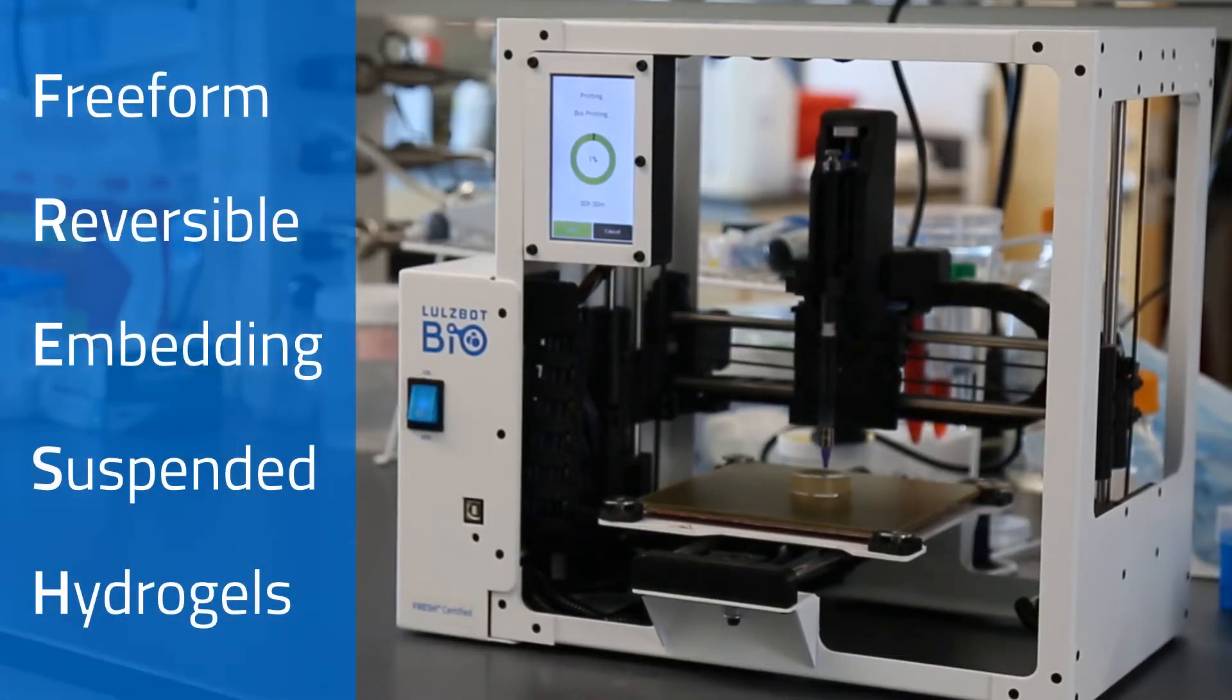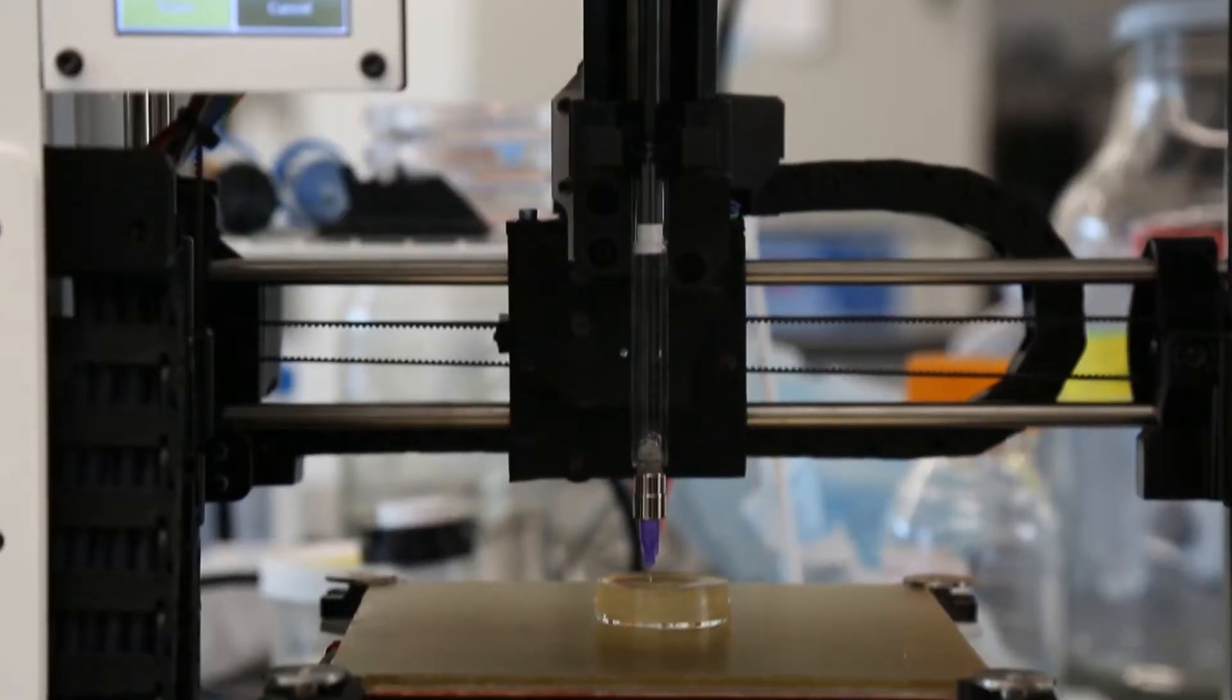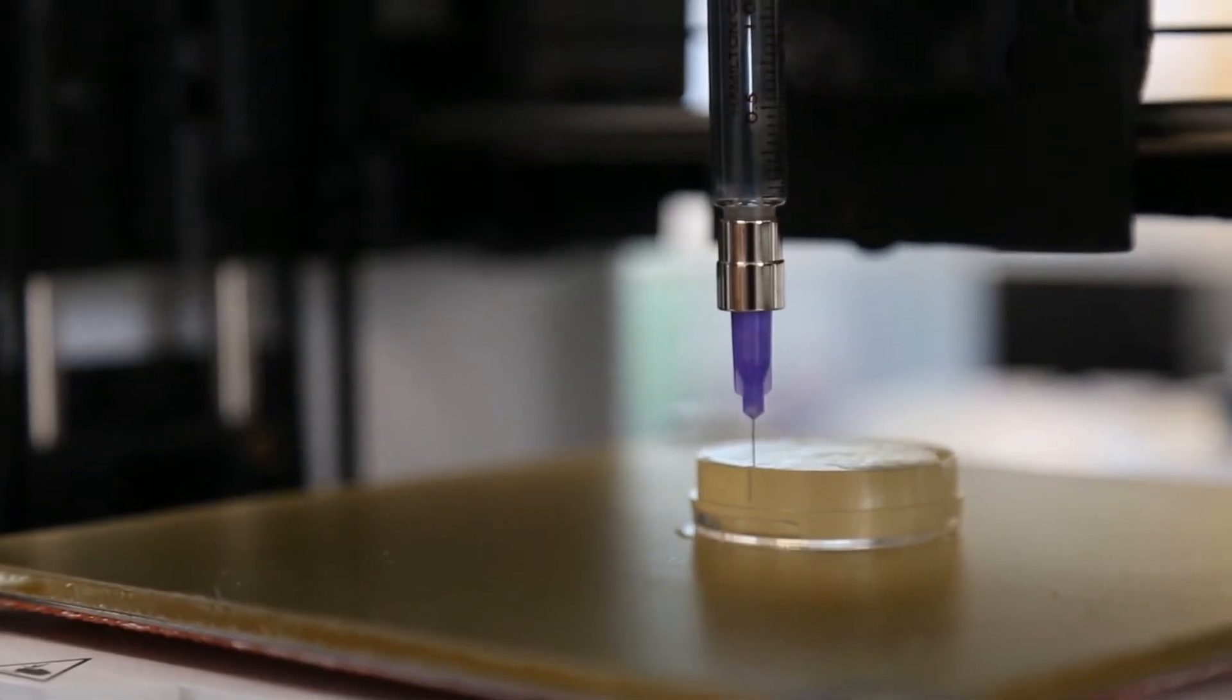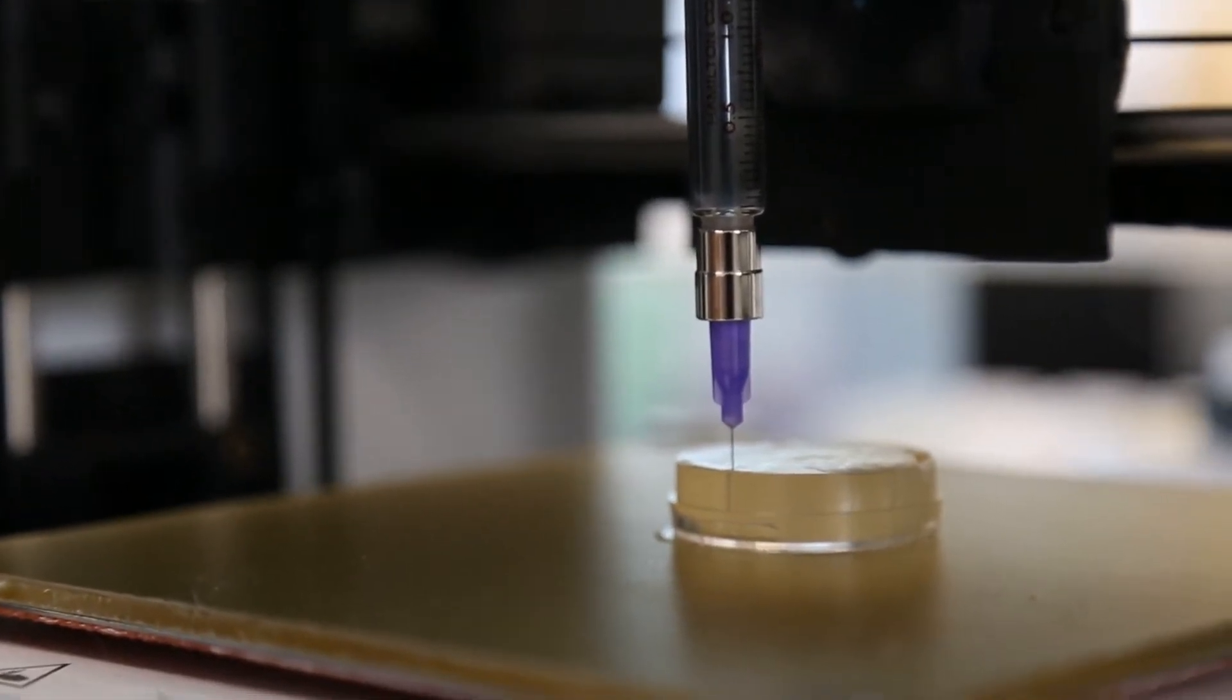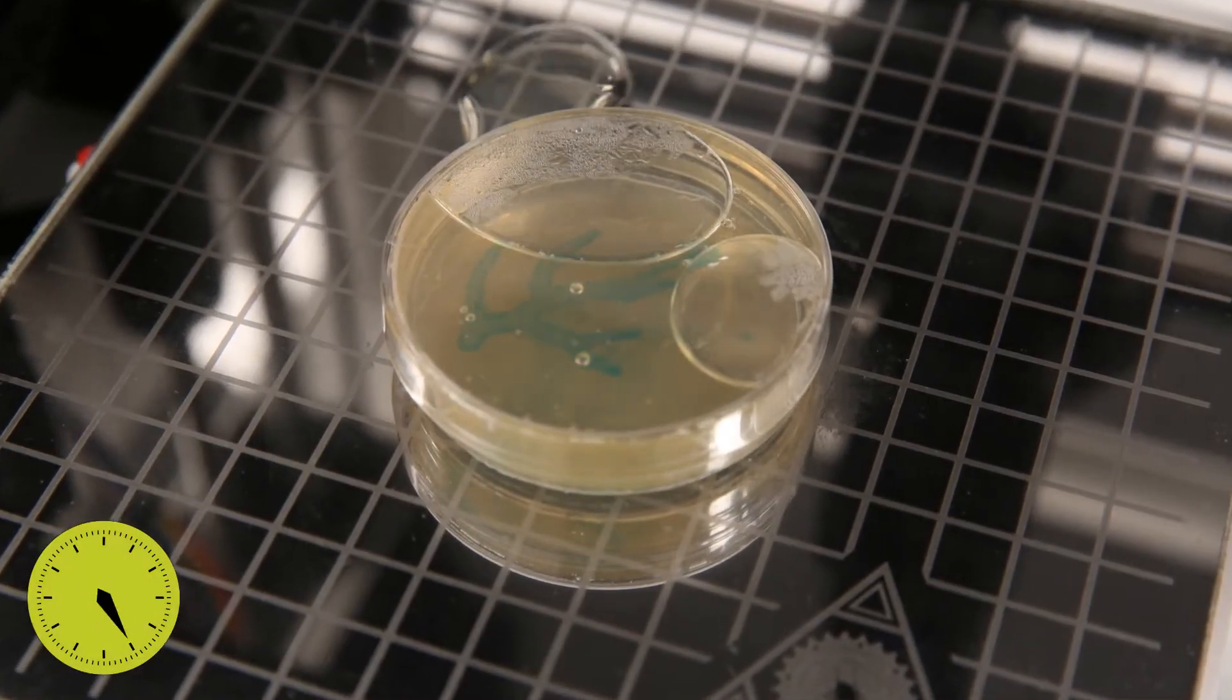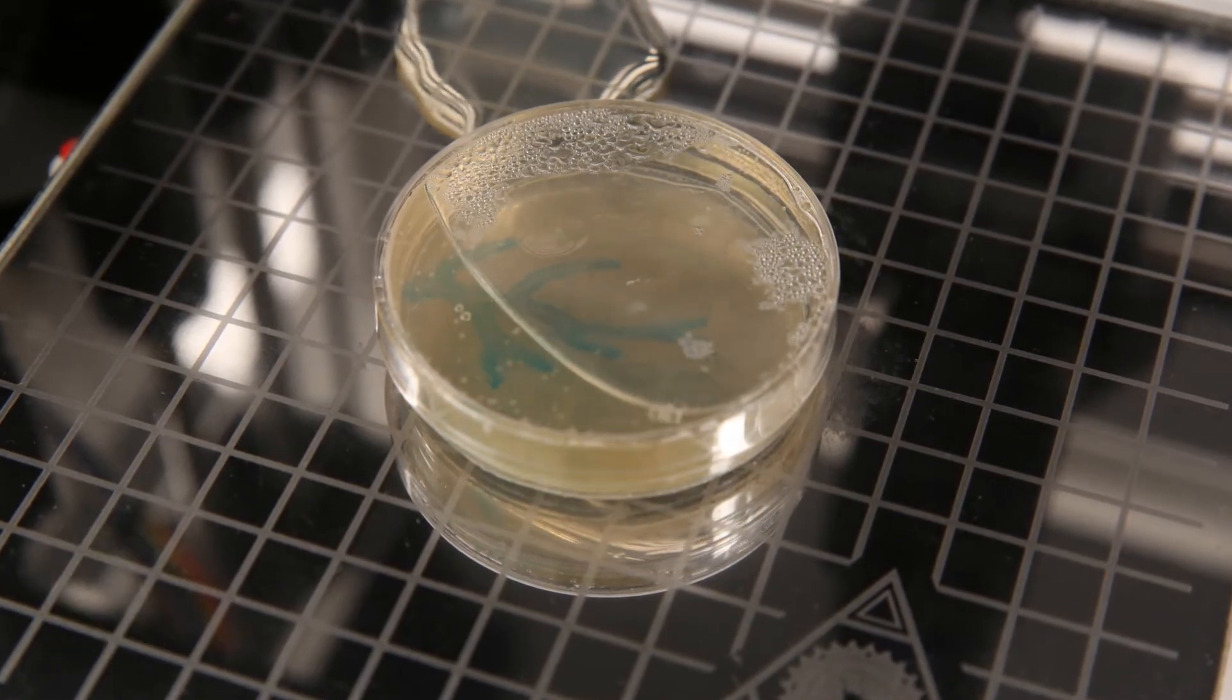FRESH is an acronym which stands for Freeform Reversible Embedding of Suspended Hydrogels. We actually drop a needle into a bath of support material. If you just printed it in air it would kind of just deform and you would never be able to create anything large. When we're done, we just raise the temperature of everything we printed from room temperature to body temperature and it melts that support gel, and then we can pull out whatever we printed non-destructively.